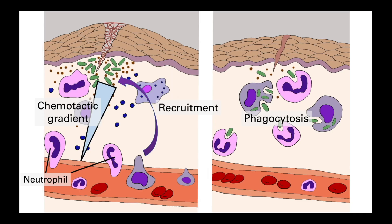Neutrophils need to be recruited to the site of infection via a chemokine trail. Once they migrate from the blood into the tissue, they are able to carry out their primary function of phagocytosis. Neutrophils engulf foreign particles into a self-contained intracellular vesicle called a phagosome, which then fuses with the intracellular granules to form a phagolysosome. The contents of the granules are released into the phagolysosome and result in the destruction of the ingested pathogen.